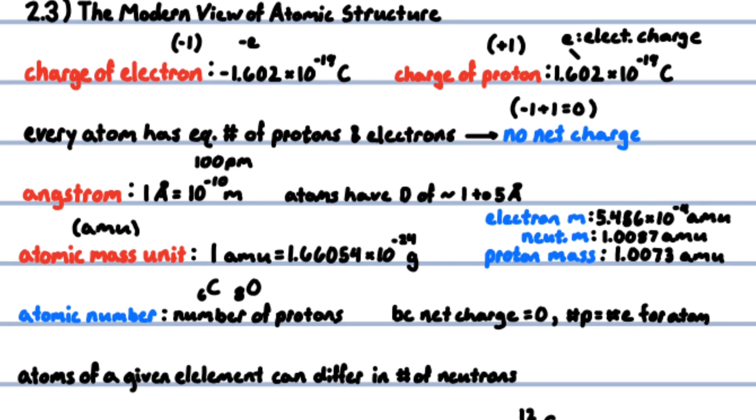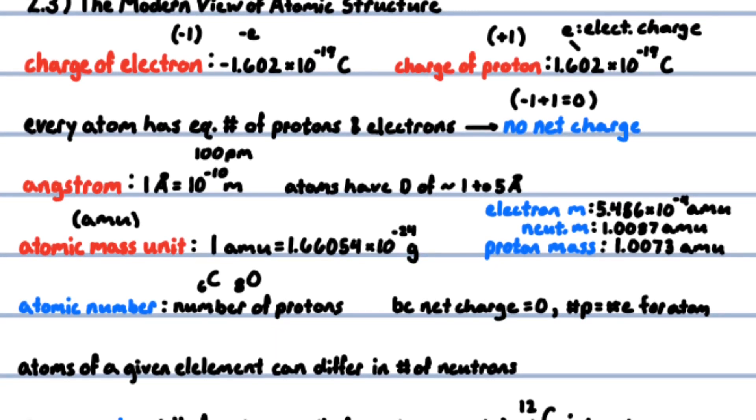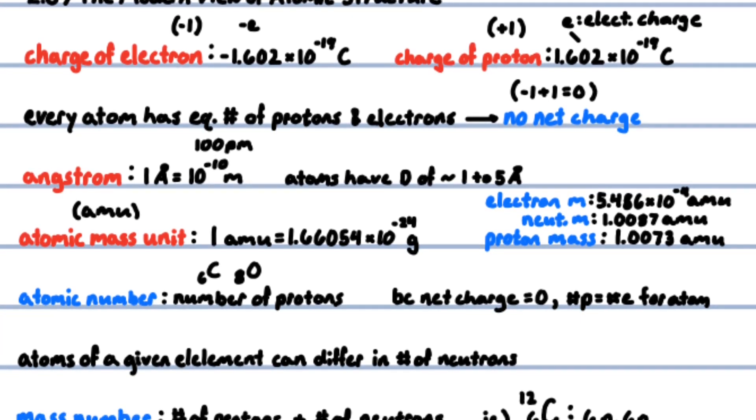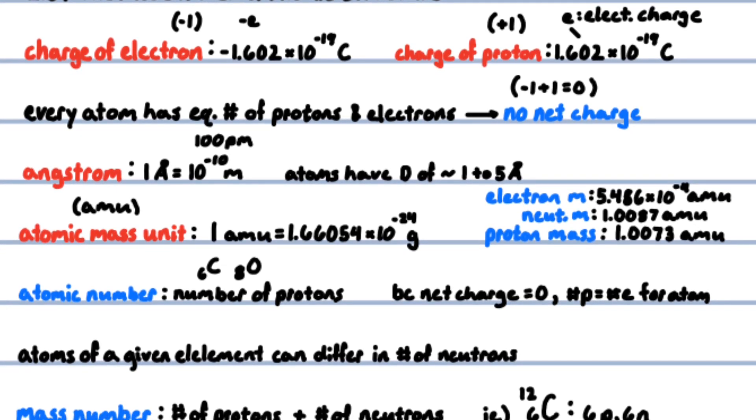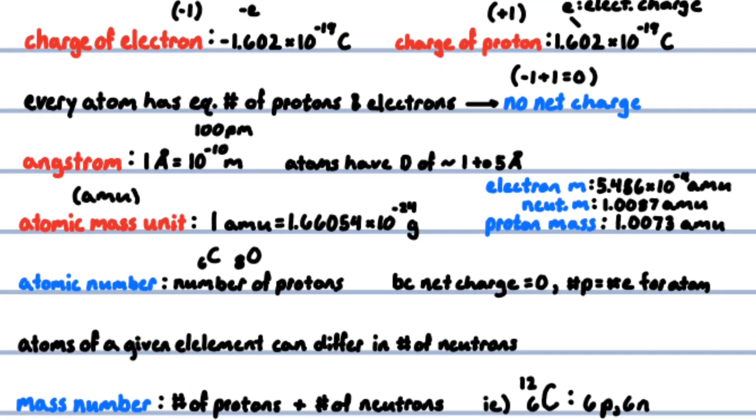The charge of an electron is negative 1.602 times 10 to the negative 19 coulombs. The charge of a proton is opposite in sign but equal in magnitude: positive 1.602 times 10 to the negative 19 coulombs. This magnitude is called the electronic charge. Every atom has an equal number of electrons and protons, so atoms have no net electrical charge.